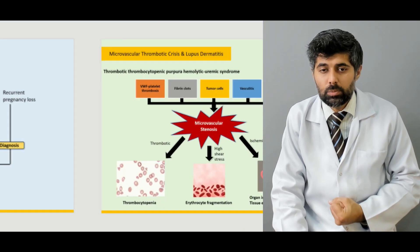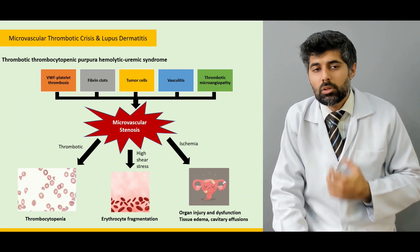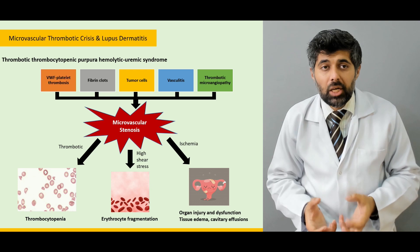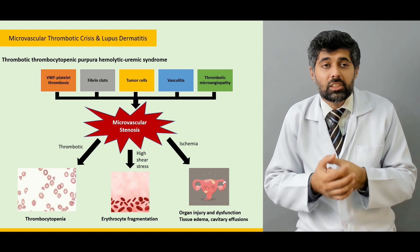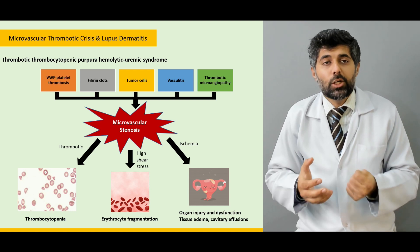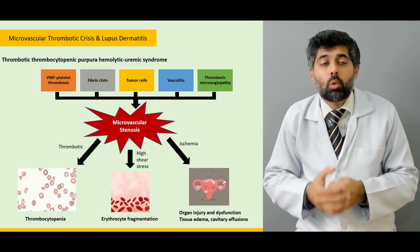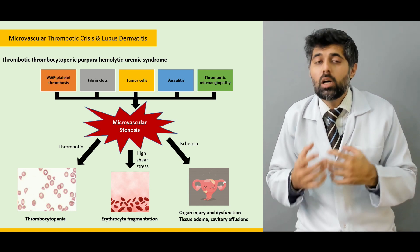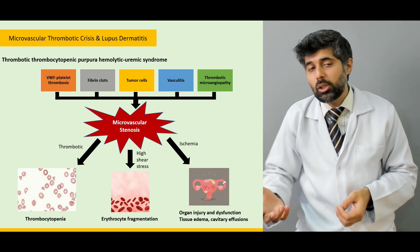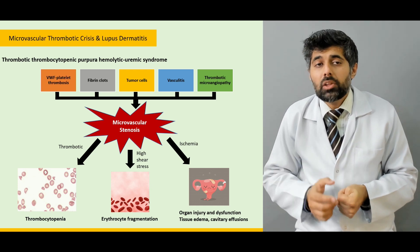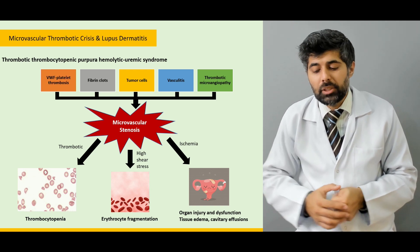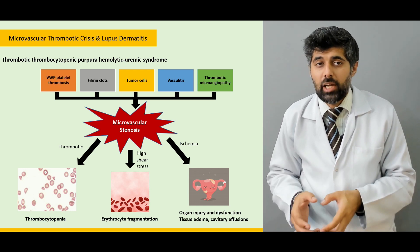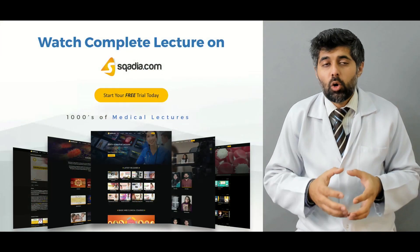We learn about microvascular thrombotic crisis — what it is, the two states that comprise it, how it happens, its three main pillars, laboratory findings, and main treatment options. We also cover lupus dermatitis and the one thing every patient with lupus dermatitis must do in order to have a better quality of life.